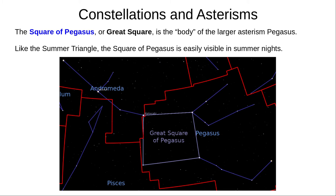And finally, the Square of Pegasus, or the Great Square. This is another asterism that's part of a larger asterism, forming the body of the winged horse Pegasus. This is also easily visible in Northern Summers.